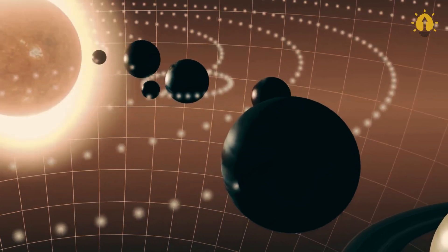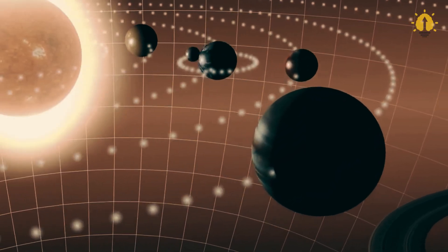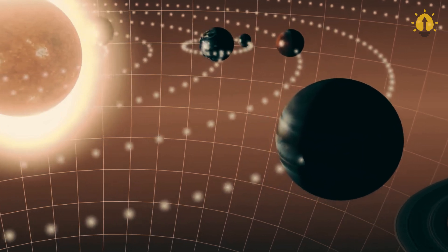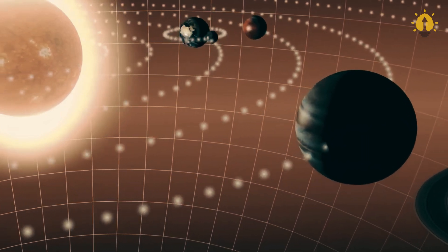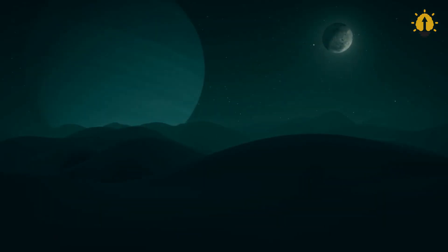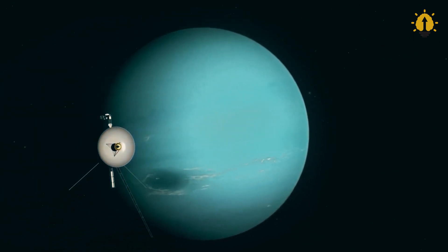First, a close flyby of Jupiter in 1979, then Saturn in 1981, followed by Uranus in 1986. Finally, in 1989, after more than a decade of venturing through the outer solar system, Voyager 2 reached Neptune.